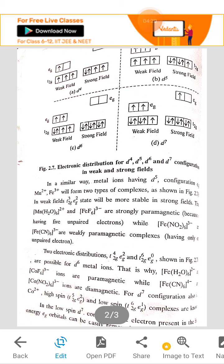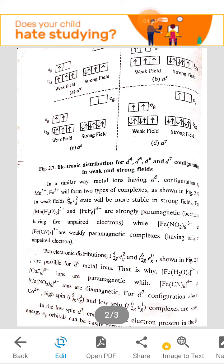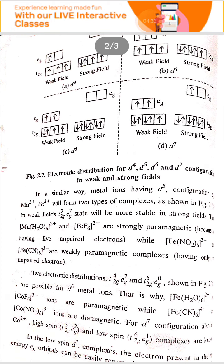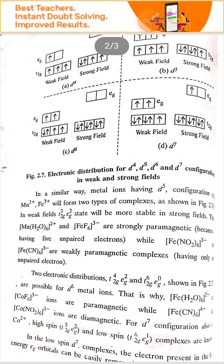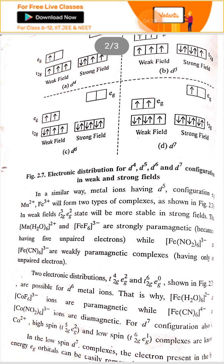the number of unpaired electrons decreases to 2 and the color also becomes light. This type of configurations are based on the two electronic distributions in which D6 metal ions,